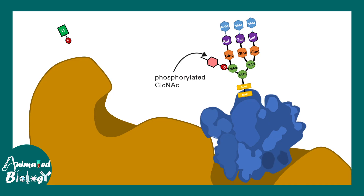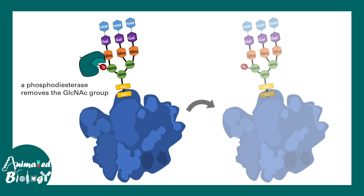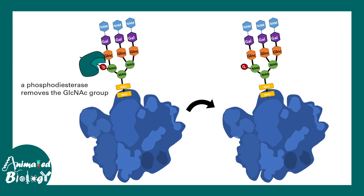Subsequently, phosphodiesterase enzymes cleave and chop off the N-acetylglucosamine residue. The protein retains the N-linked glycosylation, but now at the 6th position there is a mannose-6-phosphorylation. This mannose-6-phosphate tag is the key determinant of the delivery of the protein into the lysosome. Now let's understand how this tag gets sorted and helps in lysosomal targeting.